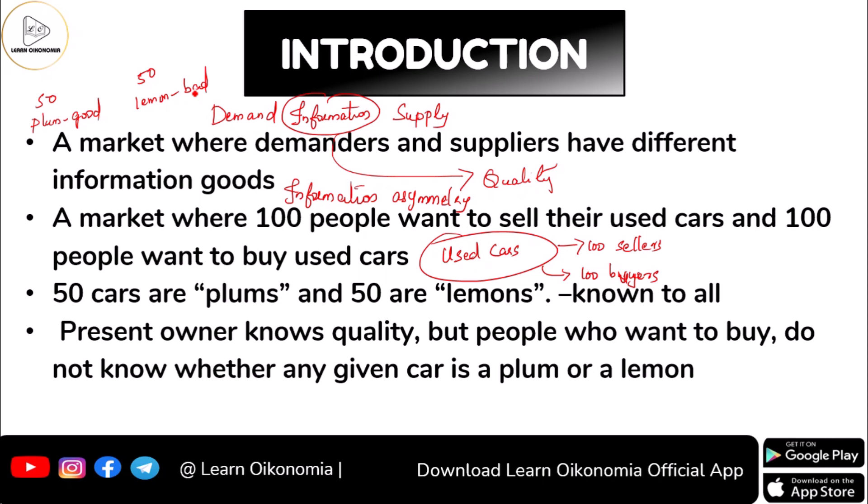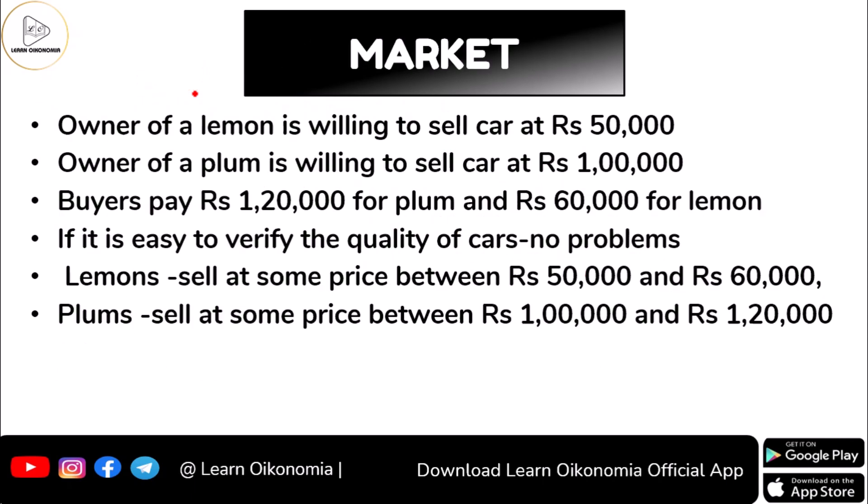In this scenario, the actual seller of the car knows exactly and completely whether his car is a plum or a lemon. The seller knows clearly whether the car he is going to sell is a plum or a lemon. However, the buyer who is going to buy the car does not know whether any given car is a plum or a lemon.